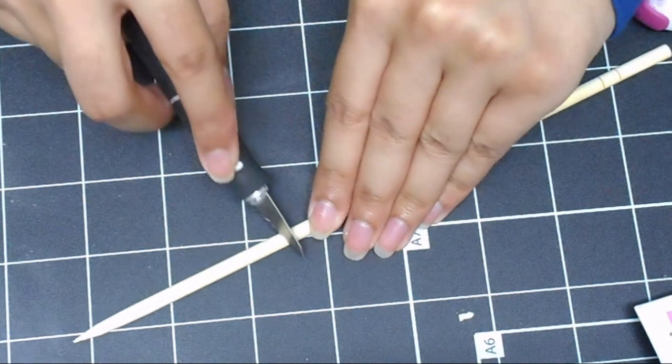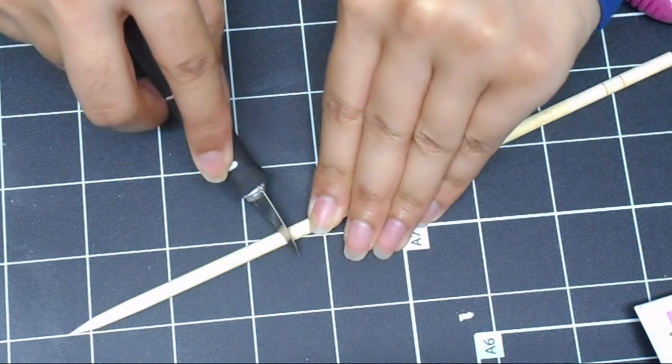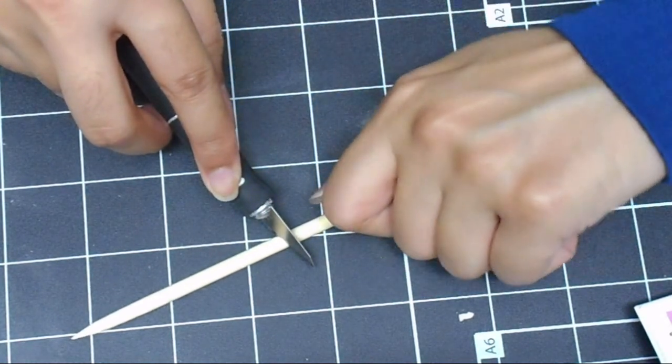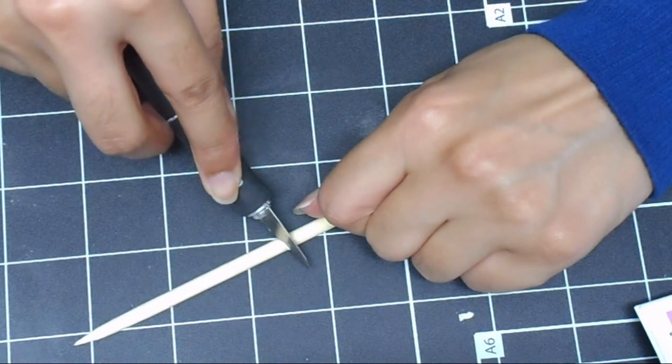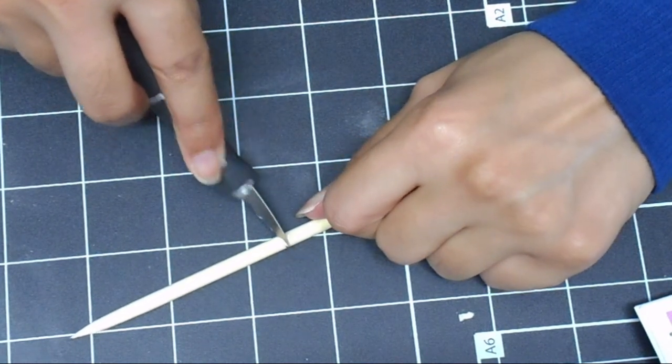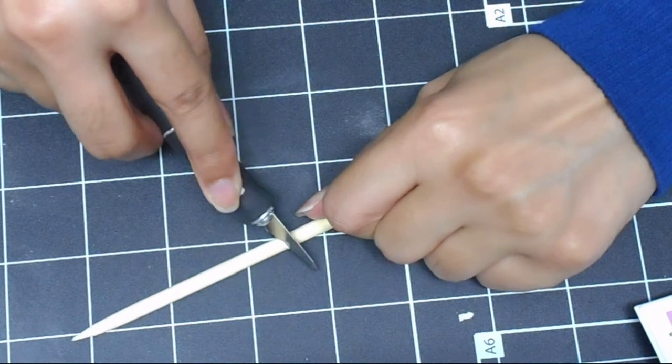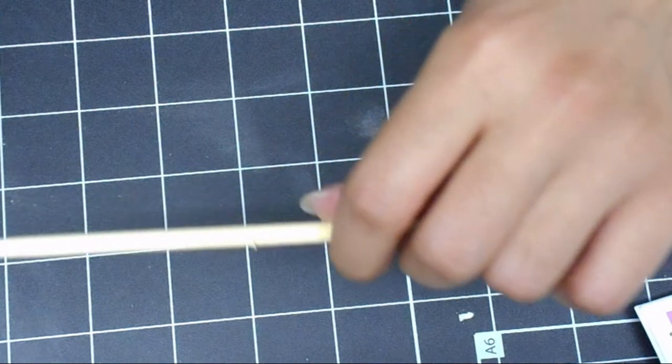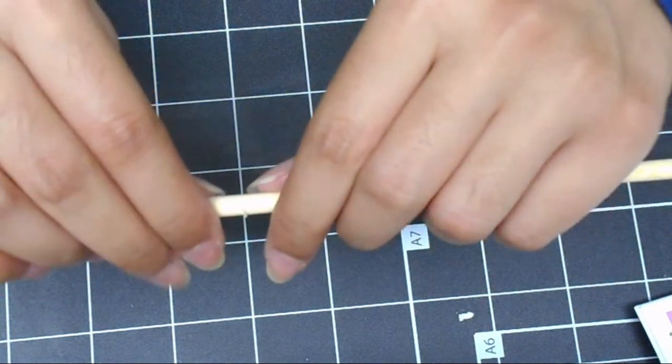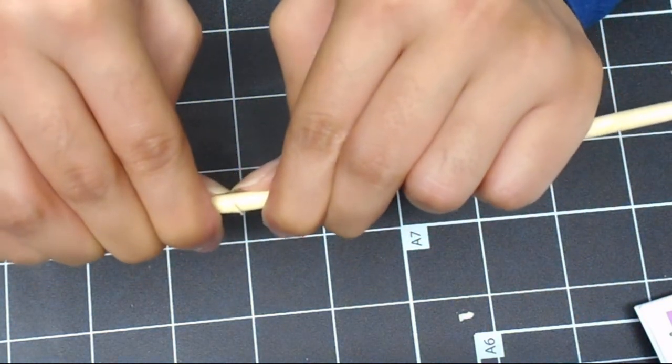So just cut it at an angle, and once you feel like you've cut halfway, you can just snap it off.